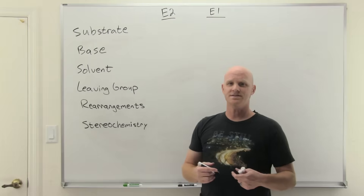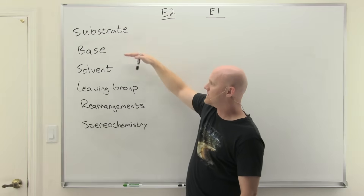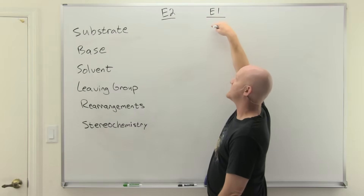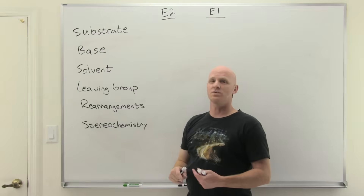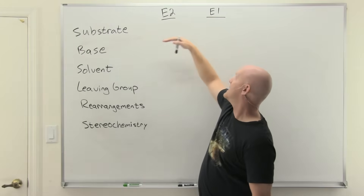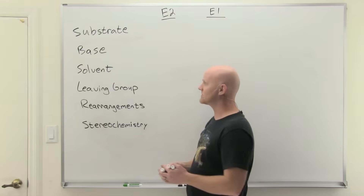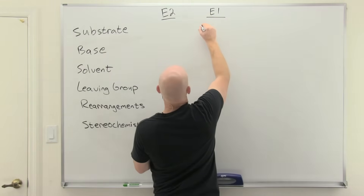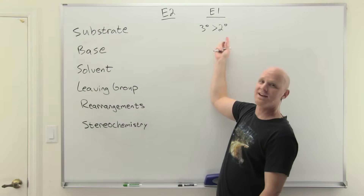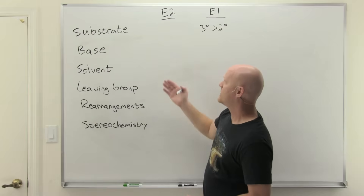Let's finish by comparing E1 and E2 in terms of substrate, base, solvent, and leaving group. E1 is pretty much exactly the same as SN1 — instead of nucleophiles, we talk about bases. E1 is all about the carbocation just like SN1, still forming in the rate-determining step. We want the most substituted carbocation possible: tertiary carbocations are the best, then secondary, and typically primary and methyl don't react in E1 elimination.